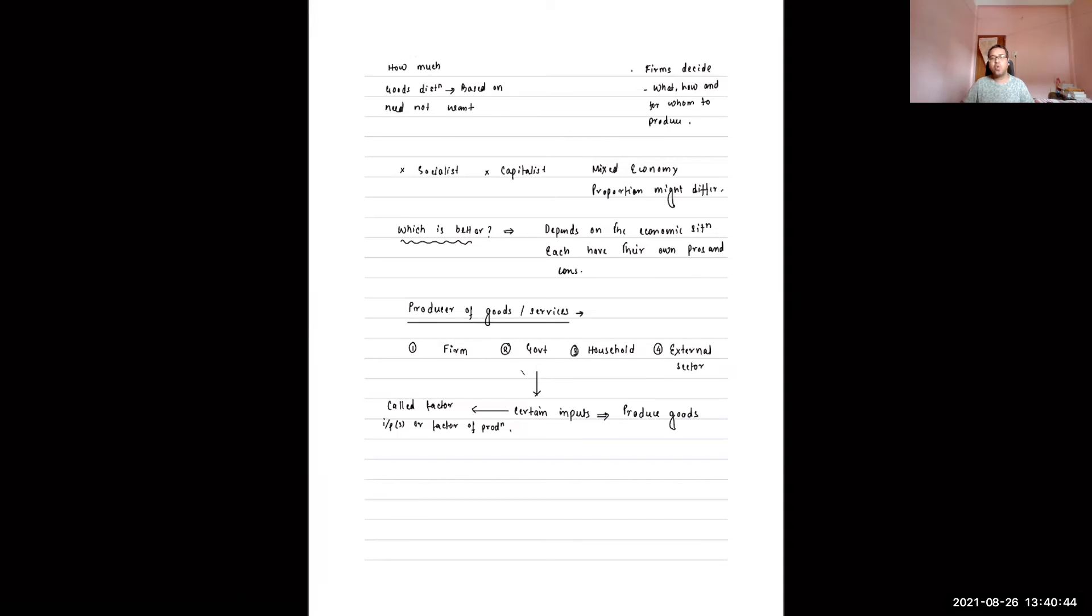Who produces goods and services in an economy? Firms produce, government through their public sector enterprises produce, households through cottage industries produce, and the external sector - certain goods that we import from other countries. All these producers of goods will need certain inputs. These inputs are called factors of production or factor inputs. These are the inputs that we need to produce goods.